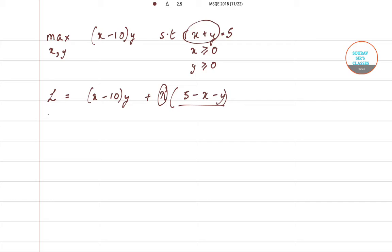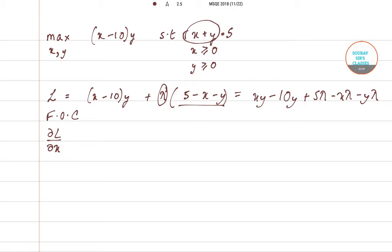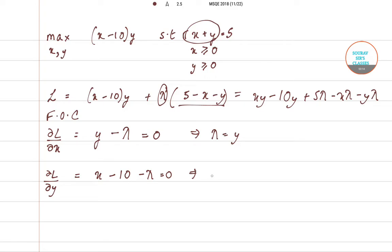We write the first order conditions. The Lagrangian expands to xy minus 10y plus 5 lambda minus x lambda minus y lambda. The first FOC, del L / del x = y minus lambda = 0, gives lambda = y. The second FOC, del L / del y = x minus 10 minus lambda = 0, gives lambda = x minus 10. Solving simultaneously, x minus 10 = y.